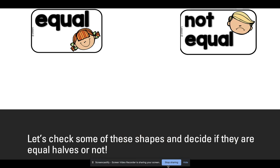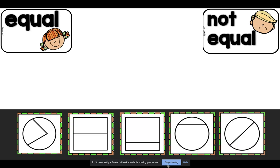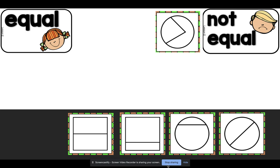Let's check some of these shapes and decide if they are equal halves or not. Let's look at the first one. We have a circle. It has two parts. Is it partitioned in half? Is it equal or not equal? This circle is not equal. It is not partitioned in half. The two sides are not the same.